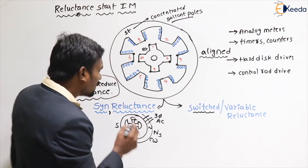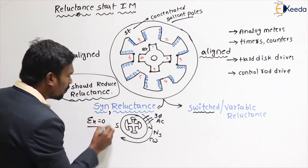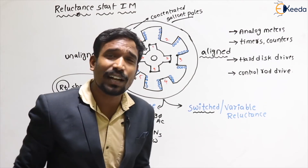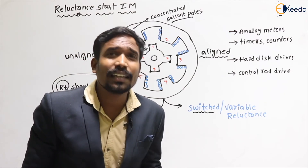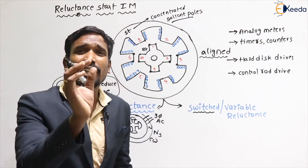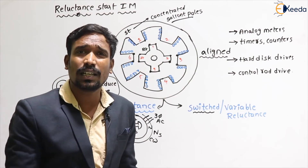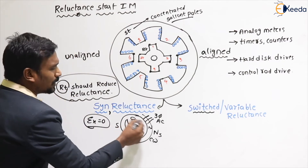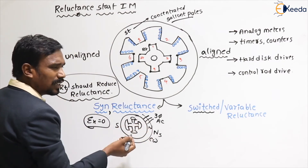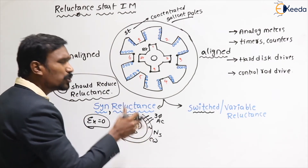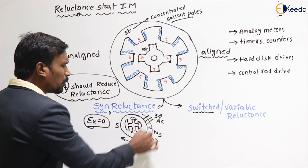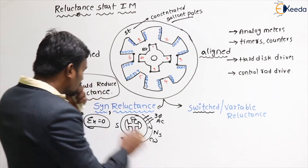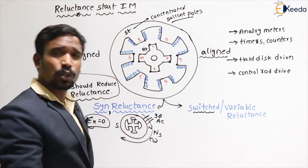The excitation to this machine is zero because the reluctance machine rotor doesn't need any winding. Simply the reluctance is the process here — we have to reduce the reluctance, so the rotor tries to catch the rotating field and reduce reluctance. Like that, our rotor will rotate in the same direction. This is a synchronous-based reluctance motor.